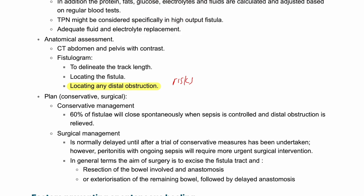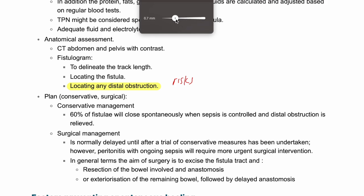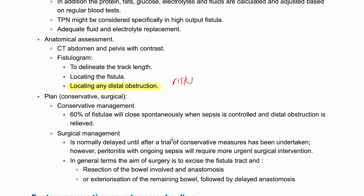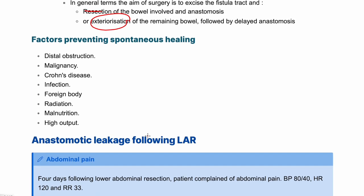The plan involves either conservative or surgical management. Around 60 percent of fistulas will heal on their own after treating sepsis and completing anatomical assessment. However, for the remaining 40 percent, surgical intervention is needed — either resection and anastomosis, or exteriorization through stoma formation with later re-communication.